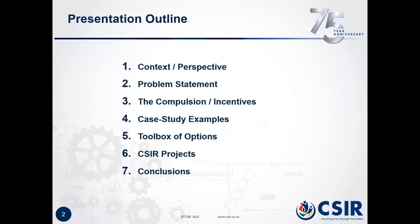In terms of structure, I'll give a bit of context and perspective. We'll look at the problem statement, which my colleagues from South Africa have articulated pretty well, so I'll go through that fairly briefly. Importantly, what came up in this morning's presentation from Prof. Majozi is the compulsion of incentives from industry in relation to the nexus in terms of efficiencies and resource use. I'll talk to one or two case study examples and briefly examine the toolbox of options for resource optimization, and two CSIR projects.